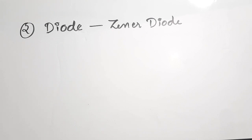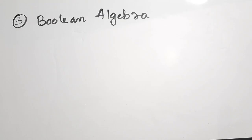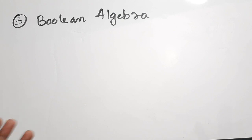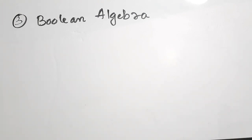The third topic is Boolean algebra, which falls under digital electronics. Along with Boolean algebra, I want to add digital logic gates and number systems, because in competitive examination previous year question papers there is not a single paper without at least one question from this area. You can study number systems, Boolean algebra simplification, and logic gates together in a single day and cover a vast area.